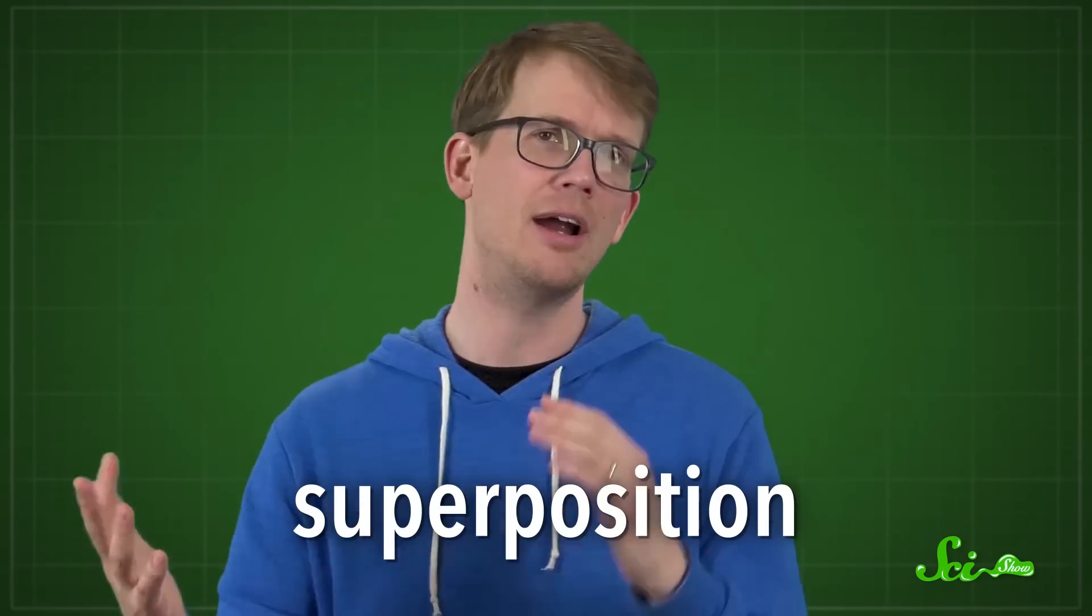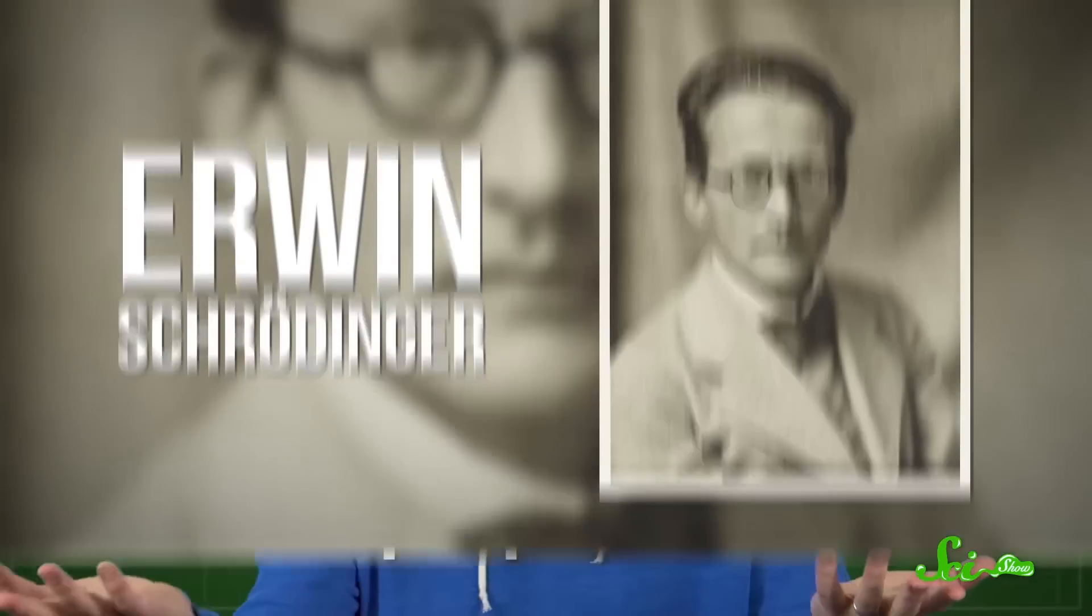It also says that certain things, like which way an electron is spinning, aren't really set until you observe them. And until you do, the electron is spinning in both directions at once. This concept, that particles are in multiple states at the same time, is known as superposition,